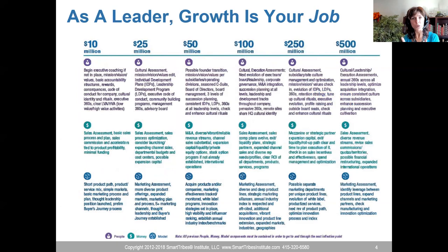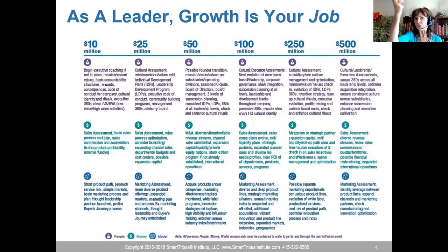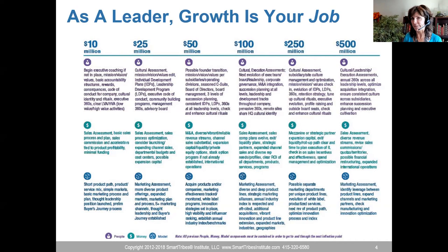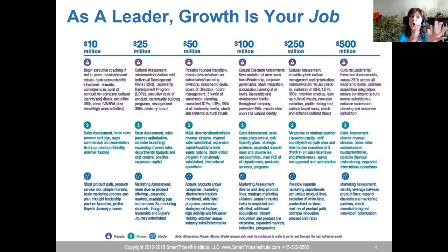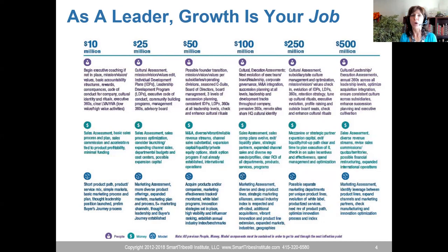Many of you have seen our inflection point chart. At each revenue inflection point, we have essentially a new company. Sometimes people need to be shifted into new roles; sometimes new people need to be brought in. The purple line across the top is the people stuff. If you're going to 50 million, you need to have the 10 million and 25 million people, money, and model things in place. A company can't seem to break through — it'll just keep touching the next inflection point, sliding back, and swirling around, eventually sliding back to the prior inflection point.